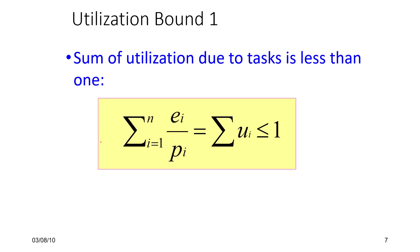The necessary condition is that the sum of the utilizations is less than or equal to 1 — this has to hold all the time. For EDF, this was found to be sufficient, but for the rate monotonic scheduling algorithm — called RMS or RMA (rate monotonic analysis / rate monotonic scheduling, used interchangeably) — this is necessary but not sufficient. The sufficient bound is much lower.